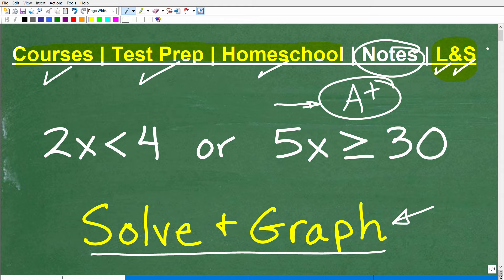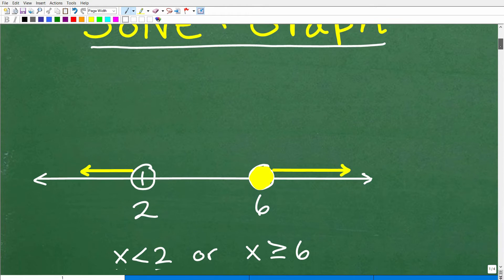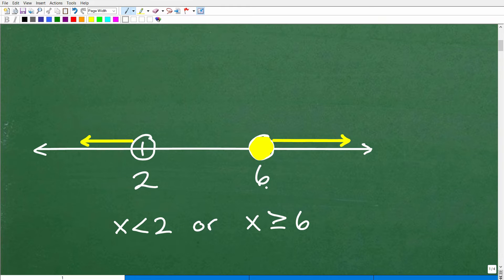Okay, so let's go ahead and take a look at the solution here to this inequality. So, 2x is less than 4 or... Now, this word is going to play a nice role in this problem here. We've got to definitely understand what this means. So, 2x is less than 4 or 5x is greater than or equal to 30. So, what is the answer? Well, here it is right here. Here's the graph.